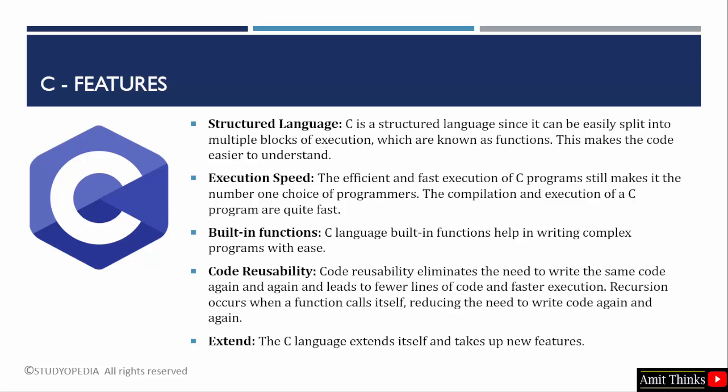The execution of C programs is quite fast. It has a lot of built-in functions so that you can easily write complex programs. These built-in functions can be used for common tasks such as input-output, string manipulation and memory management. It also includes a rich set of operators for arithmetic, logic and bit manipulation. Code can be reused, eliminating the need to write the same code again and again, reducing your lines of code. It also has a concept of recursion, in which a function calls itself, avoiding the need to rewrite code.